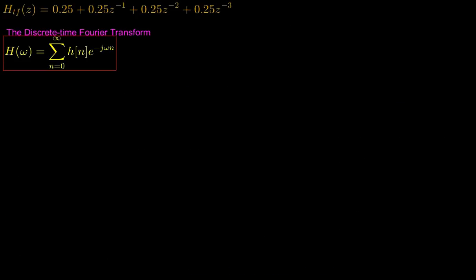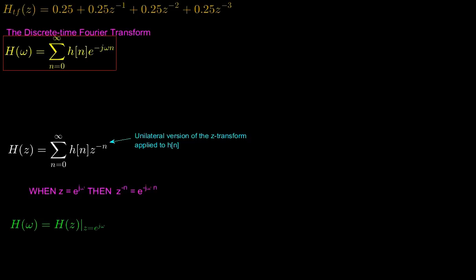Pairing this equation with the unilateral version of the z-transform of h[n], we can see that the equations are very similar, and are in fact identical when z equals e^(jω). So H(ω) equals H(z) when z equals e^(jω).